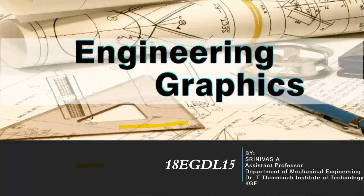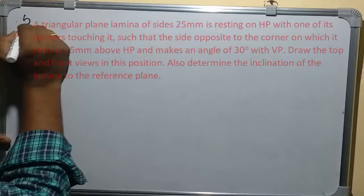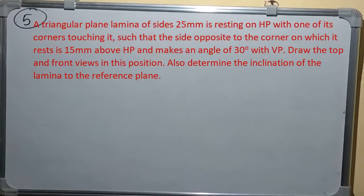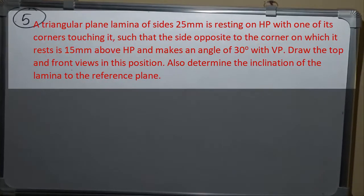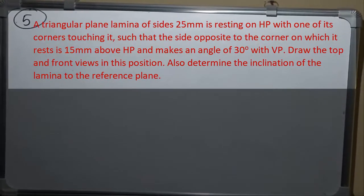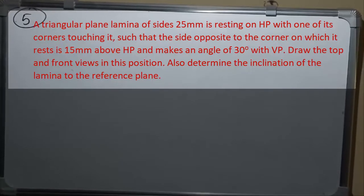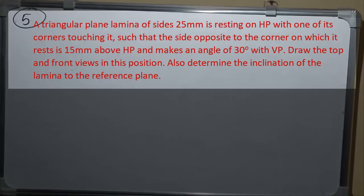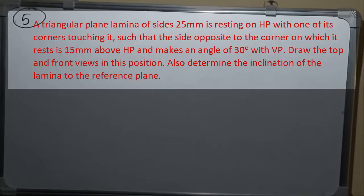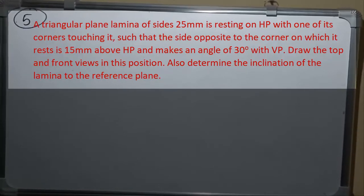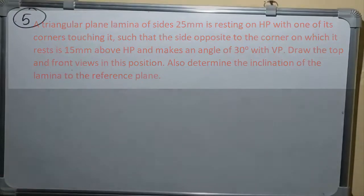Welcome back to engineering graphics class. In this session we will discuss problem number 5 in projection of planes. The question is: a triangular plane lamina of sides 25 mm is resting on HP with one of its corners touching it, such that the side opposite to the corner on which it rests is 15 mm above HP and makes an angle of 30 degrees with VP. Draw the top and front view. Also determine the inclination of the lamina to the reference plane.